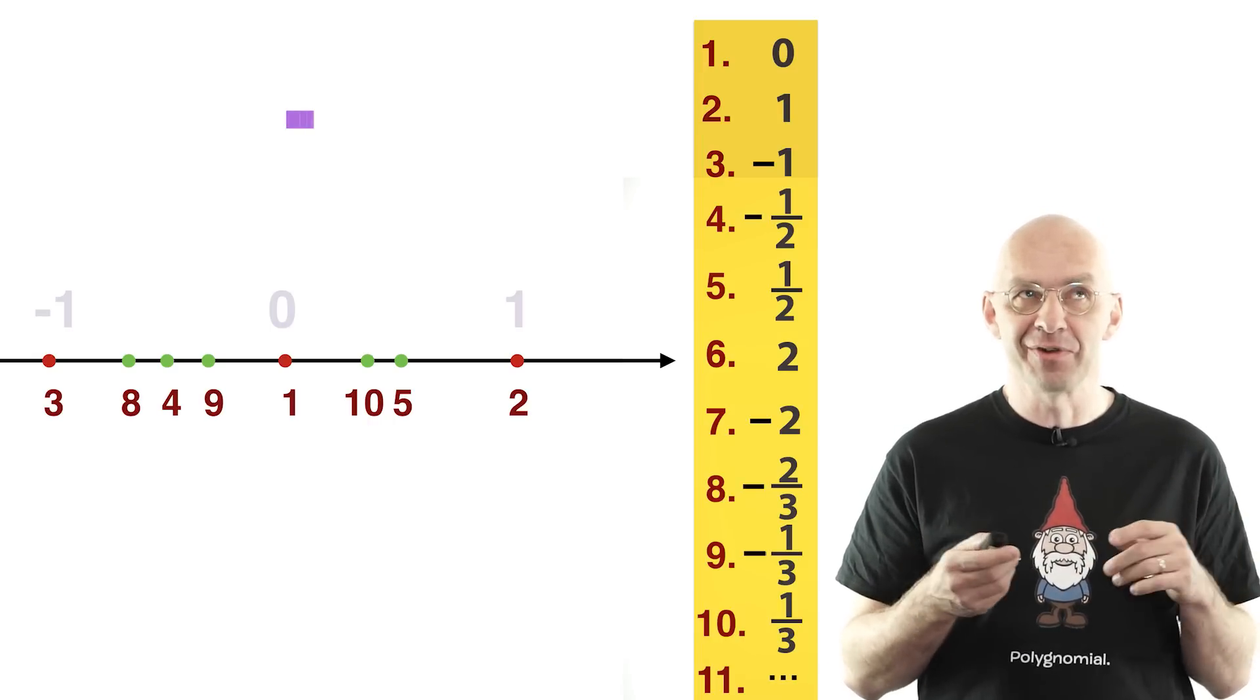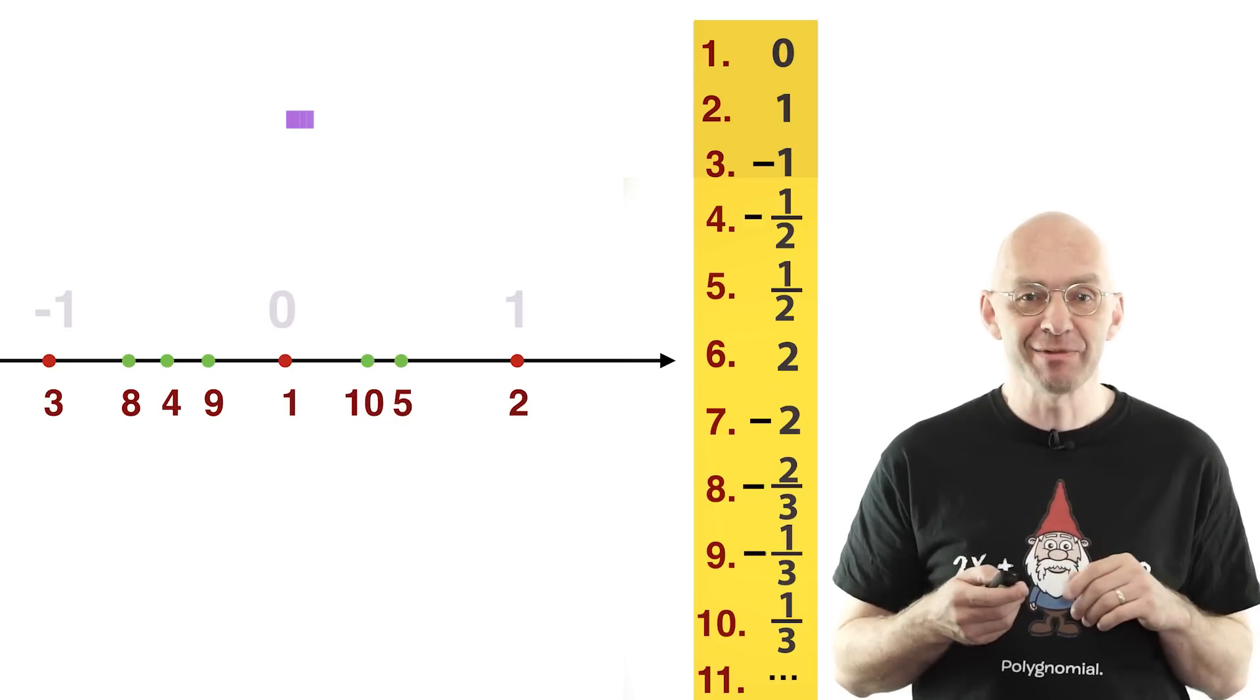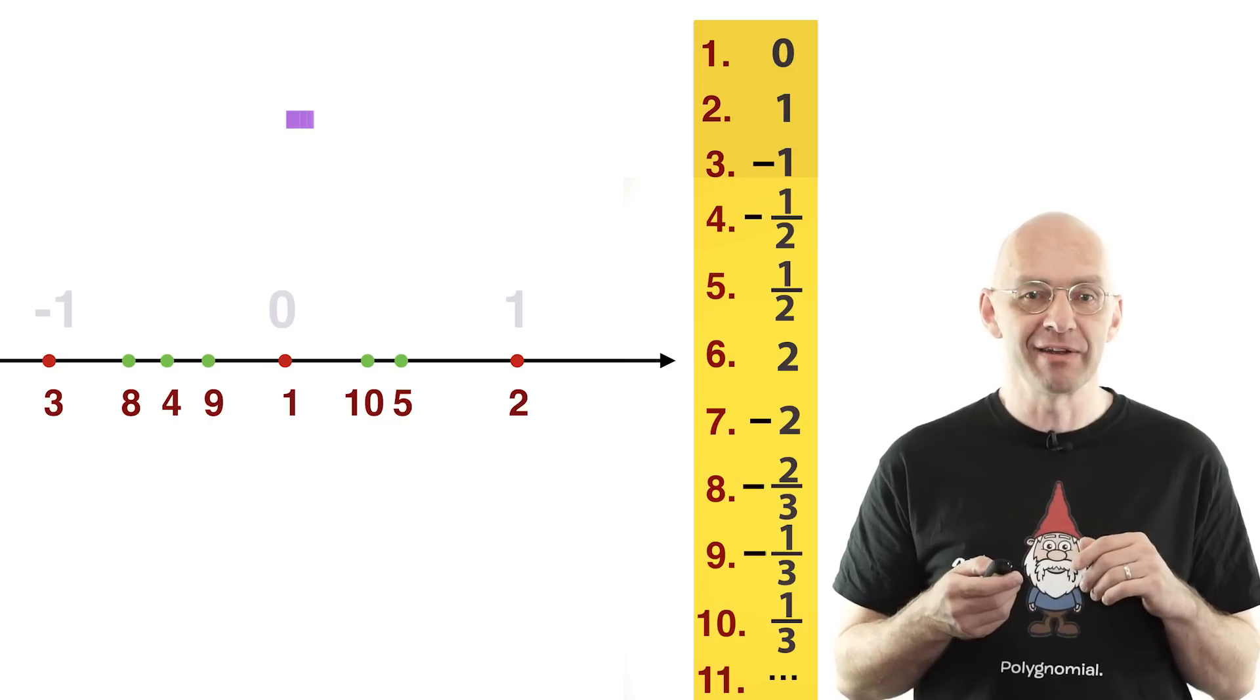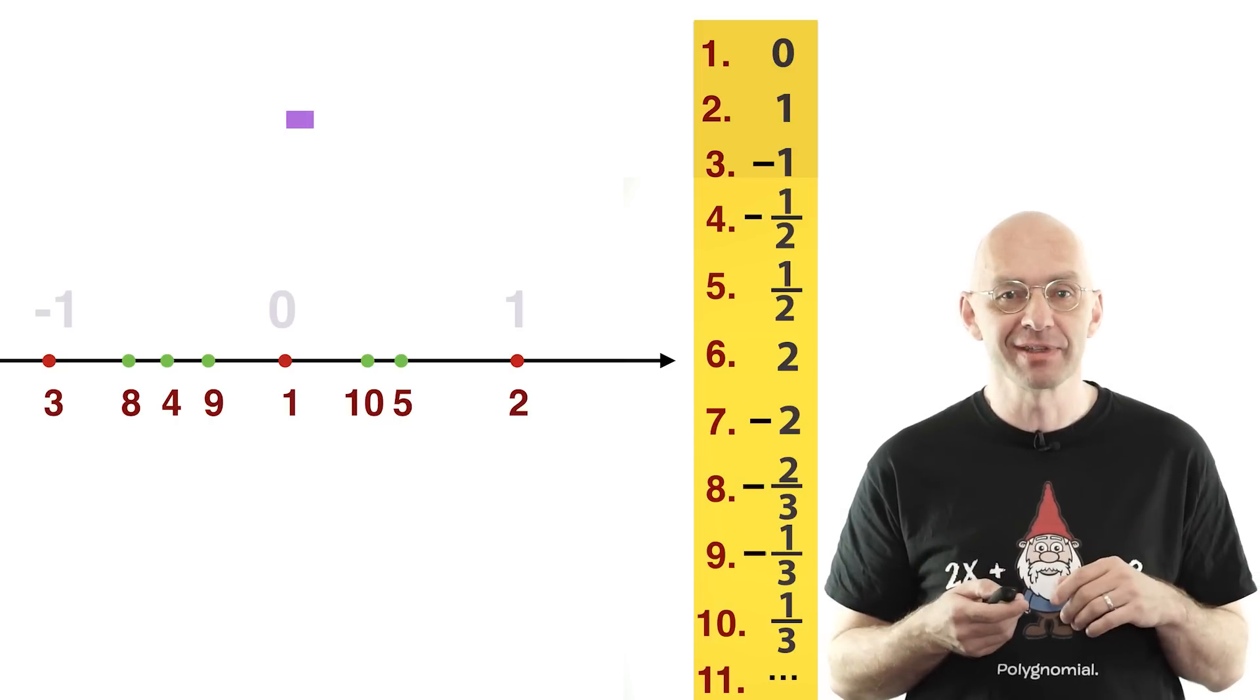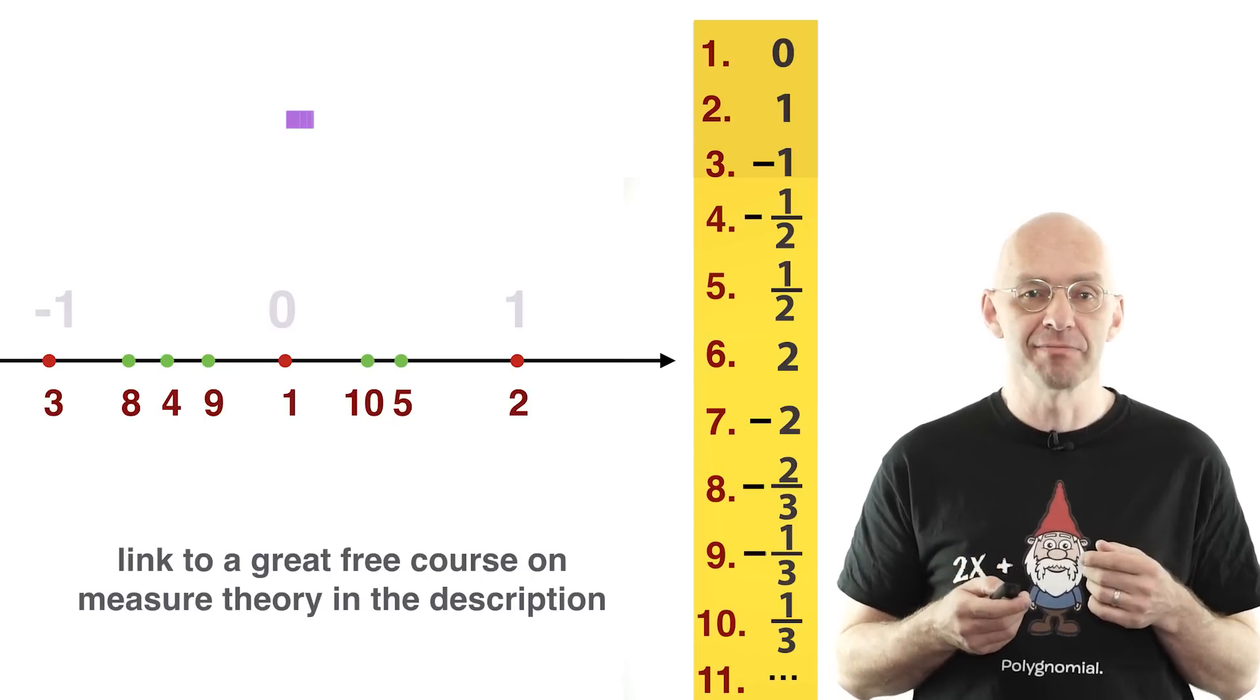So in a sense they are not even there, although you think they are there. Well, of course the same is true for any other countably infinite set of numbers like the algebraic numbers. Every countably infinite set of numbers has measure 0.